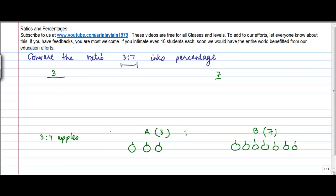Okay, now what is the total number of apples? The total number of apples is 3 plus 7 is equal to 10.